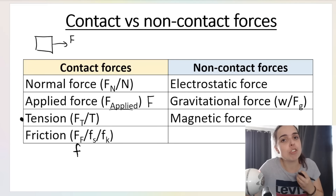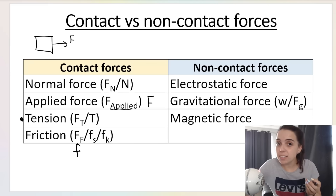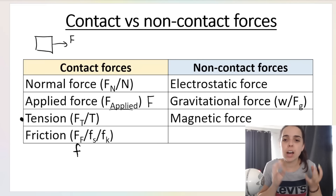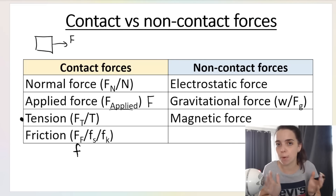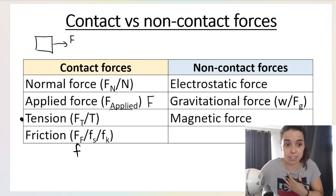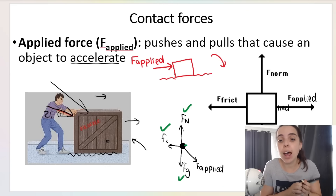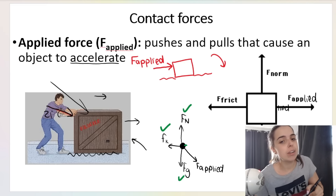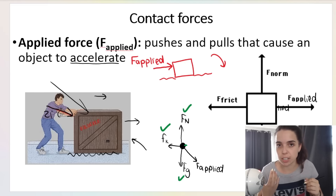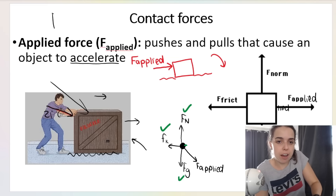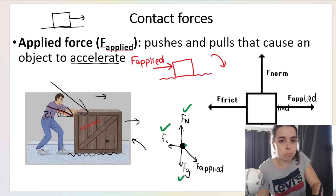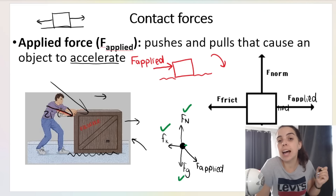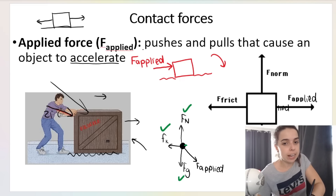Let's go over some of these forces briefly — and remember, I will go over some of them in more detail in their own videos. It's very important to understand these forces, how they work, how to calculate them, and how to resolve them into components before you approach a Newton's law question, because if you can't do the basics you can't do the more complicated stuff. Our first contact force is the applied force — it is a push or a pull force. It can cause an object to accelerate, but we can also have an applied force acting on an object moving at a constant velocity, where the applied force and friction balance out.